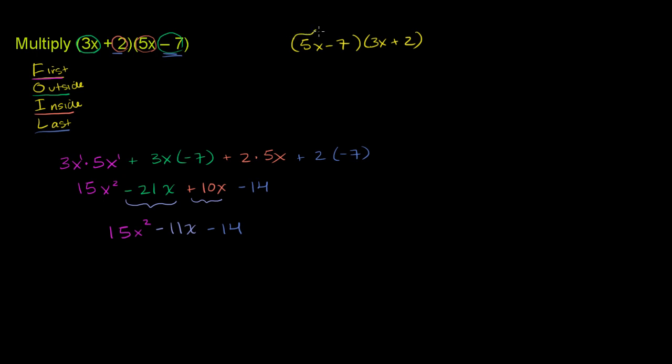And we can distribute this whole thing times each of these terms. Now, what happens if I take 5x minus 7 times 3x? Well, that's just going to be 3x times 5x minus 7. So I've just distributed the 5x minus 7 times 3x. And to that, I'm going to add 2 times 5x minus 7.